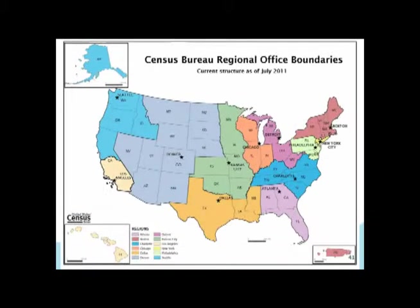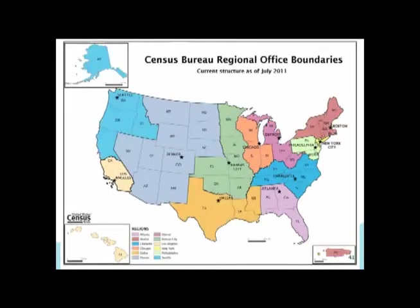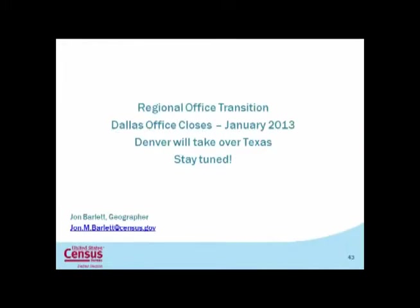So let me just show this: we're going to do a quick exercise. If you look at this map, this is the census offices as they exist. Take a quick look at this map and let's look at the next map. Does anyone see any differences? That does not look good for me, does it? In 2013, the Dallas office will close. Due to federal funding cuts, they've gone from 12 regional offices to 6. The census will still exist, we'll still do what we do, but you will need to call Denver. I just want to make everyone aware of that — it will take place in 2013.